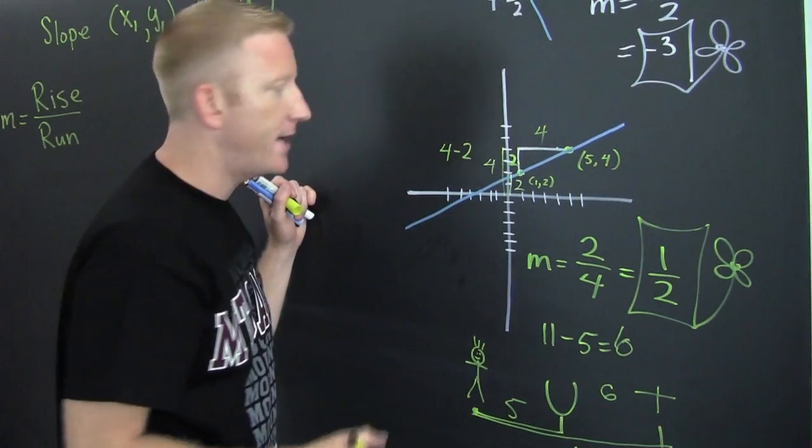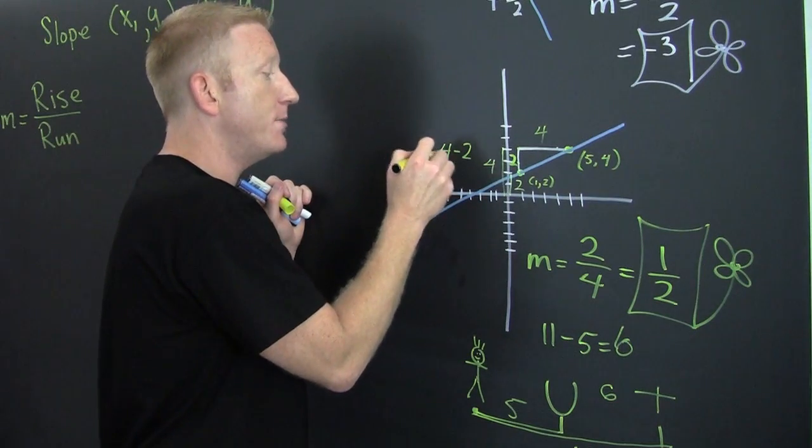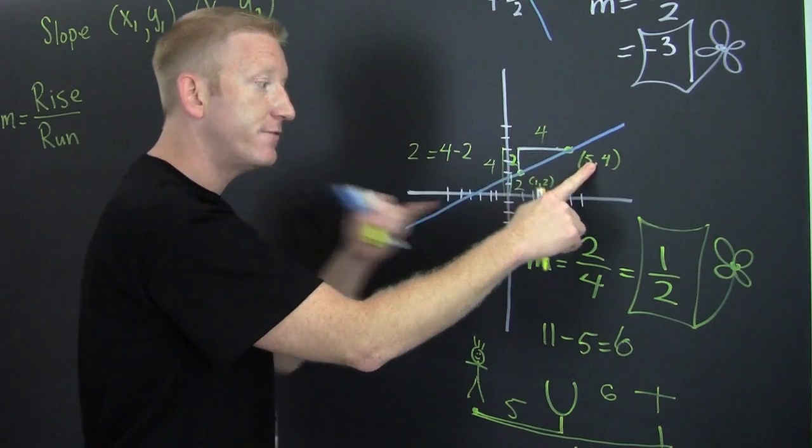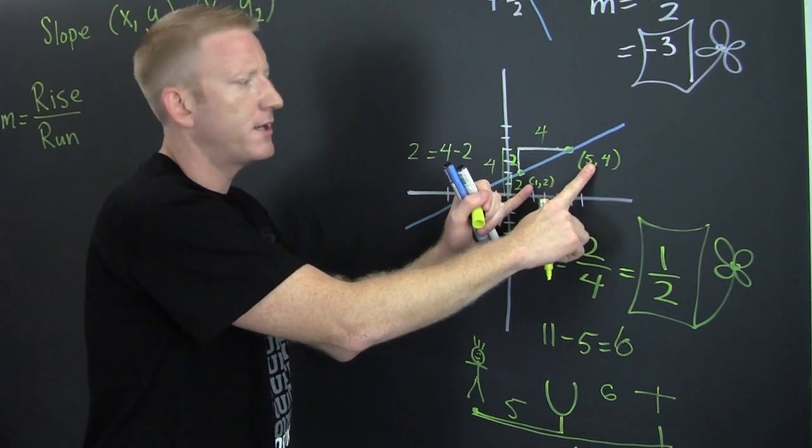Uh-huh, so the 4 minus 2 give me my 2, and that's how we got that 2 there. Similarly, we could take the 5 minus the 1. What am I talking about?